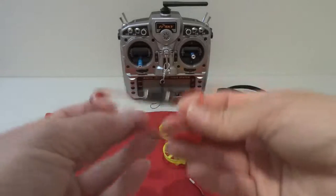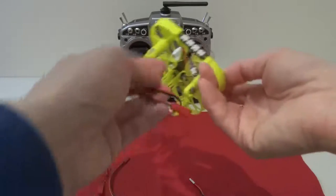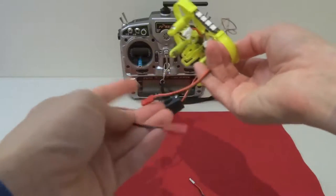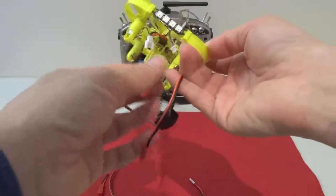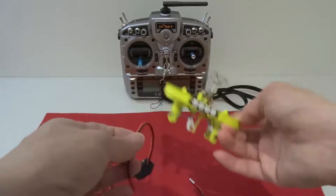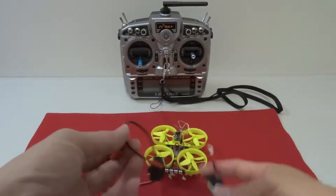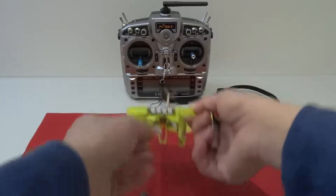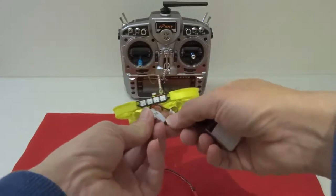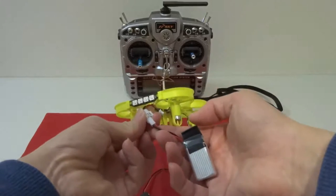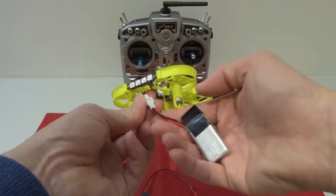But make sure that you check the polarity otherwise you're going to fry your flight control board and the camera. So what you can do is check the polarity with the battery. The black is to the left and the red is to the right.